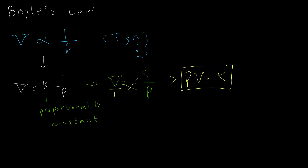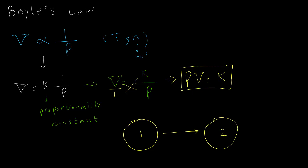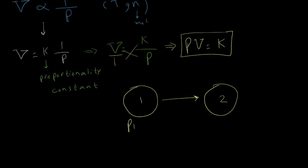If I do cross-multiplying, it means pressure times volume equals the constant k. This equation is very important because it tells us that the multiplication of pressure and volume is always equal to a constant number. So if a gas changes from condition one to condition two, the pressure and volume at condition one are p1 and v1, and at condition two they are p2 and v2.